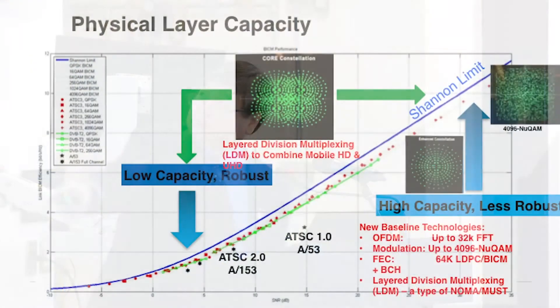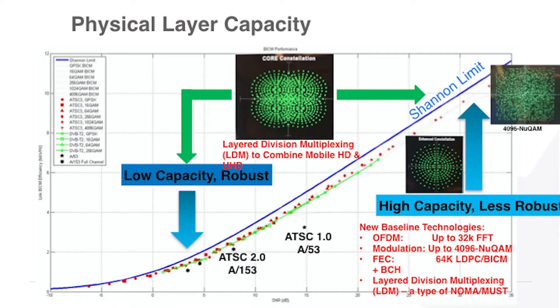That's another new technology not used anywhere. We can actually combine low-capacity robust data with high-capacity fixed transmission and put it together. That's where the constellation looks unusual. That's the new technology we are adopting.